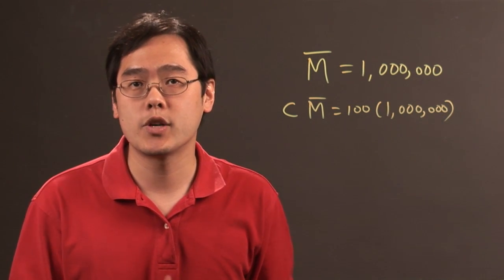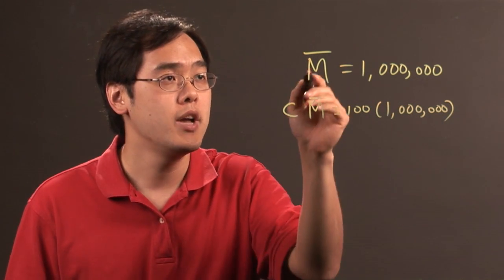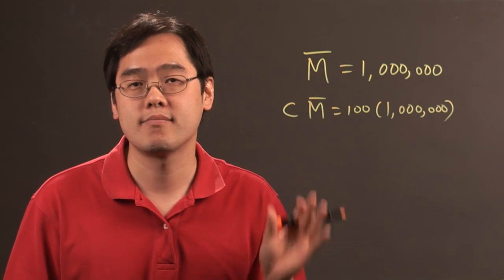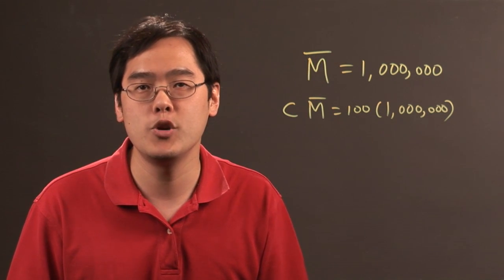But basically the bottom line is if you want to multiply by a million in Roman numeral form just indicated by M bar. So I'm Jimmy Chang and that's how to multiply by a million in Roman numerals.